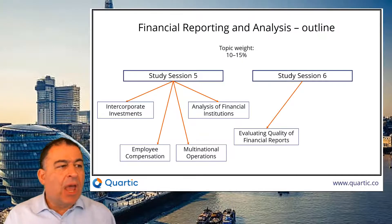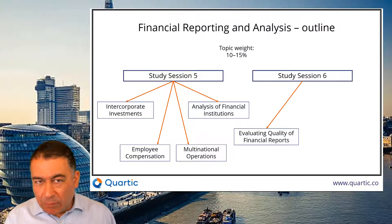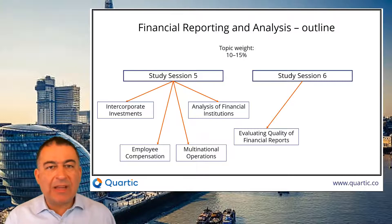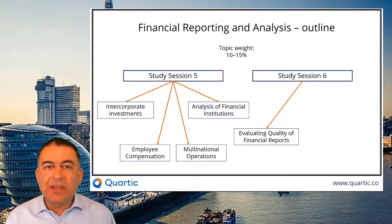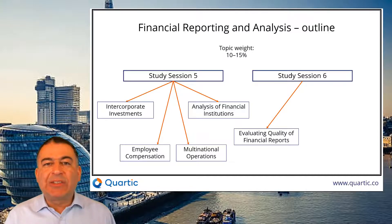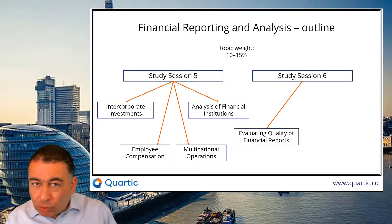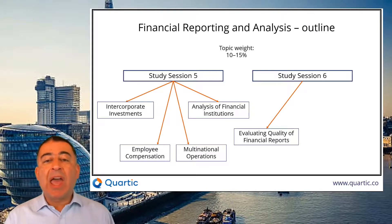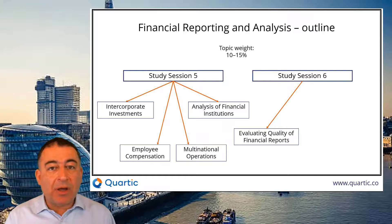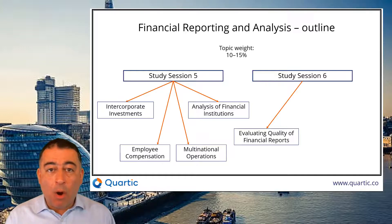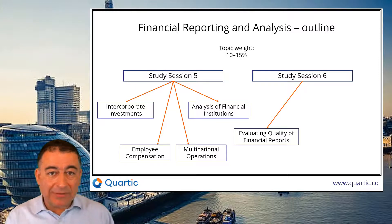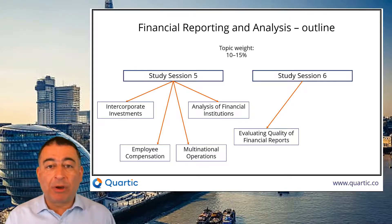Into the second study session: evaluating quality of financial reports. You covered some of this at Level 1, but this is a big extension. The quality of earnings, the quality of reporting — we look at various case studies in terms of what can go wrong, what management do wrong, and how management try to hide certain things. And of course, the six-part spectrum that we saw at Level 1, ranging from looking at the quality of reporting and earnings — from something that's absolutely amazing to something that is downright fraudulent.